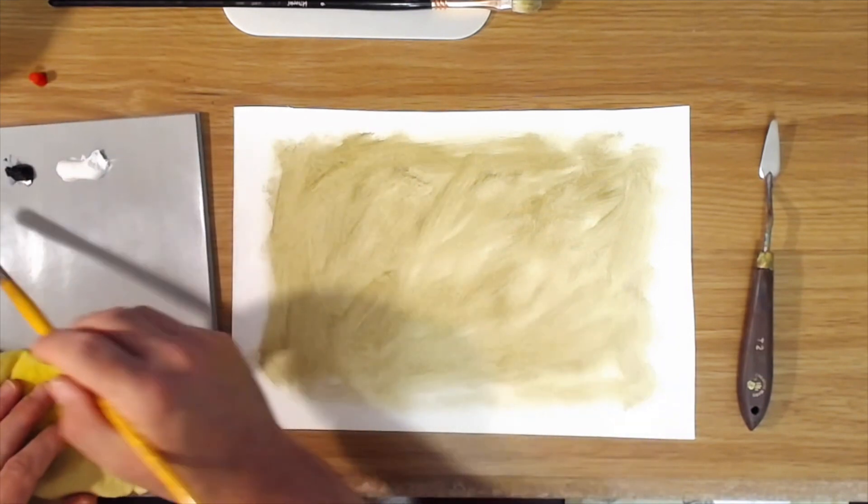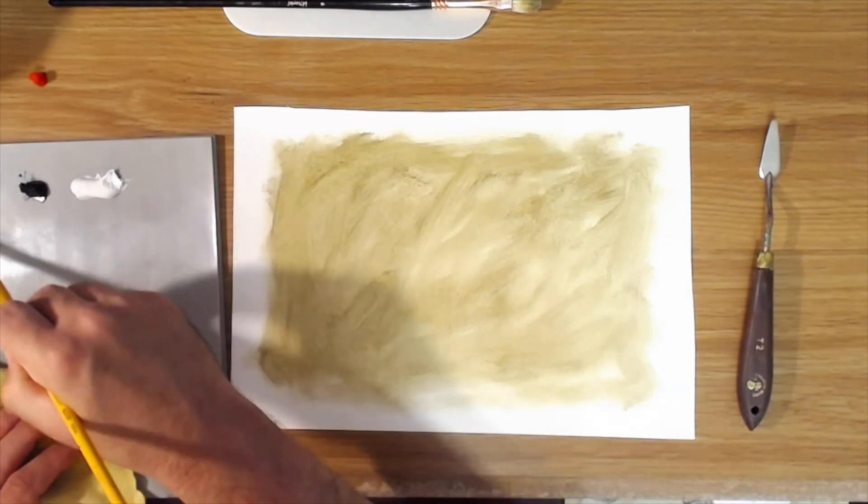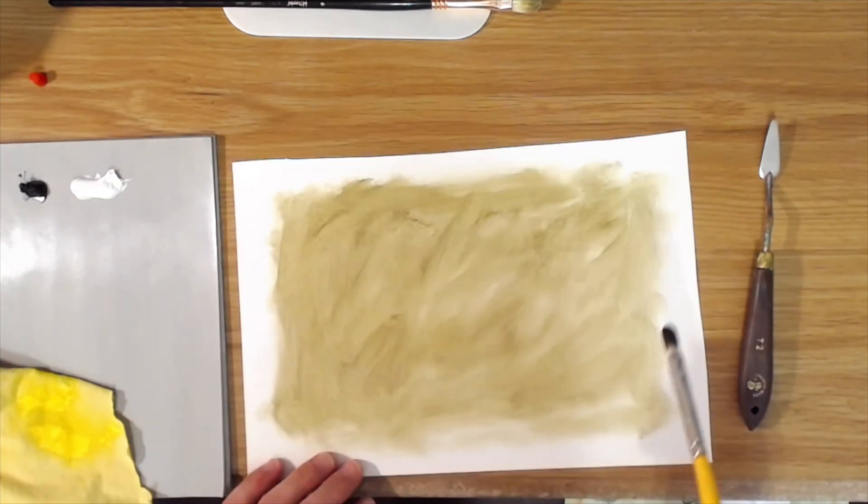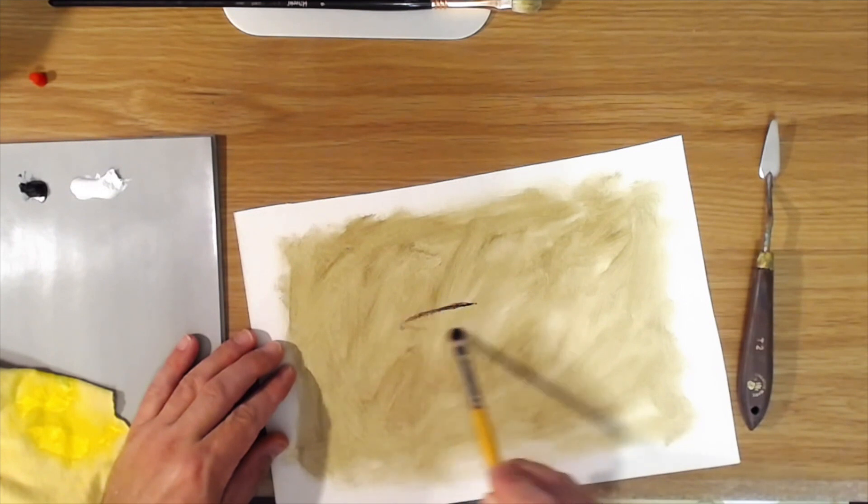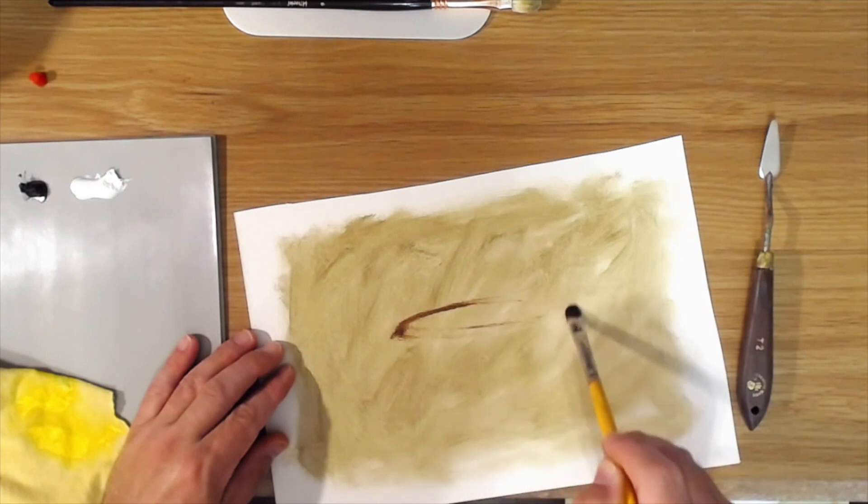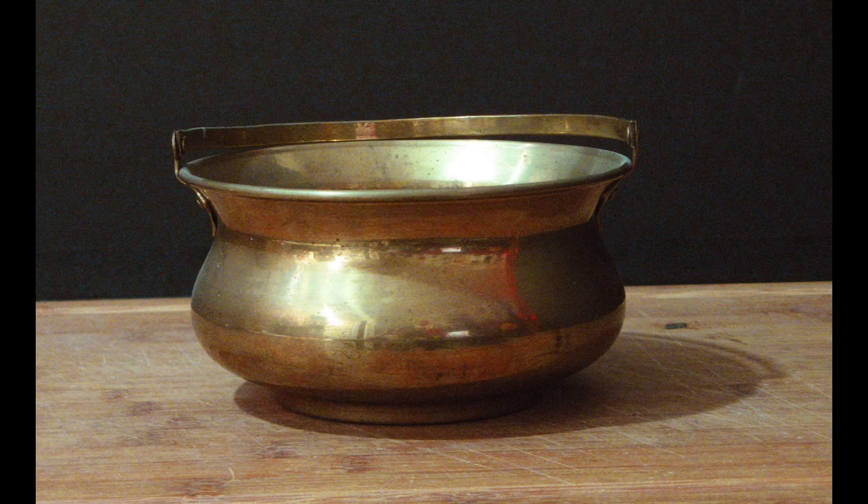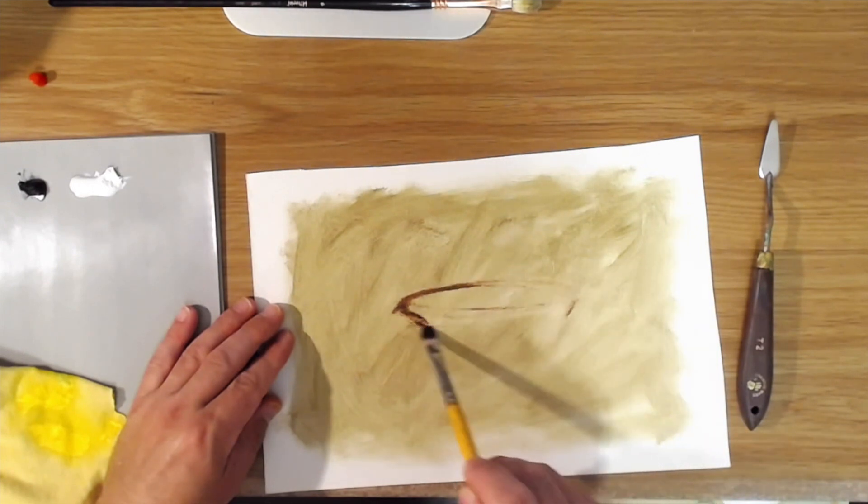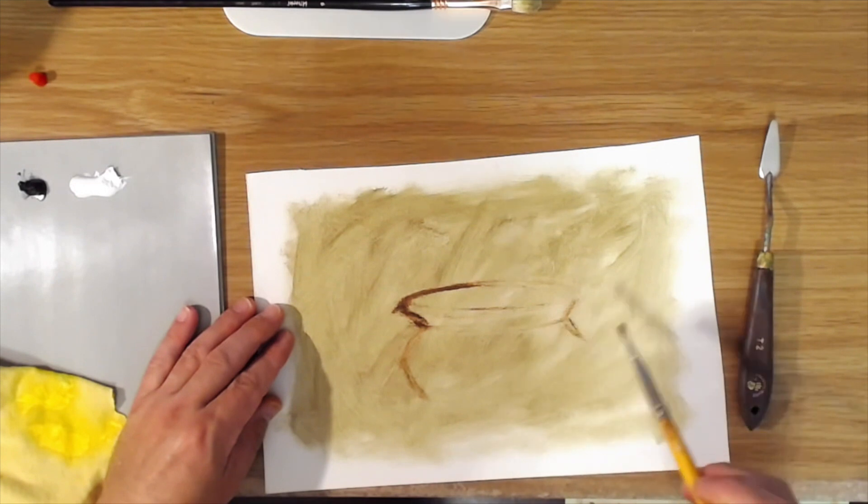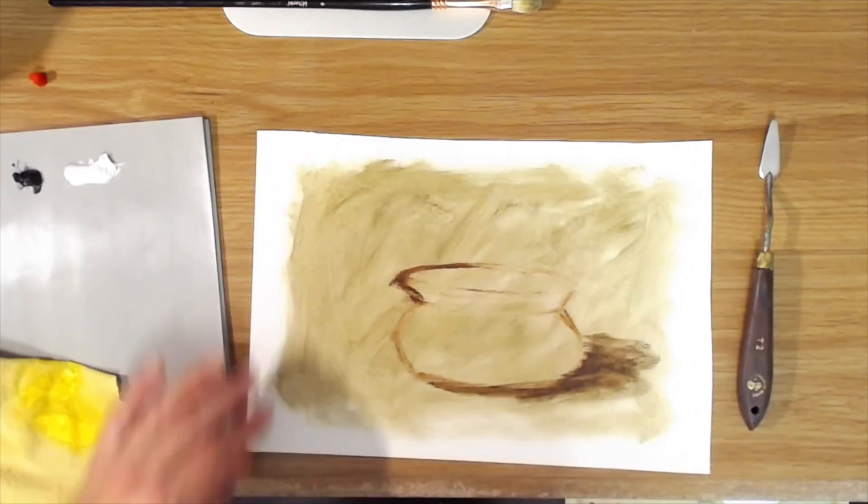The first thing we'll do is put a little quick sketch in here to make sure that we get the bowl in. I'll just sketch in the basic shape there.